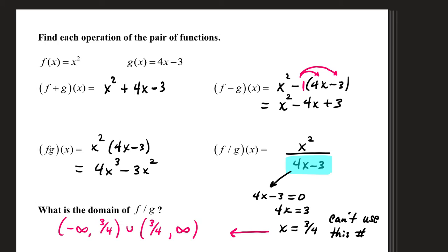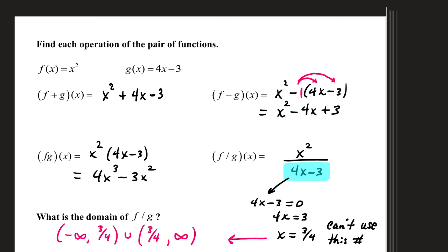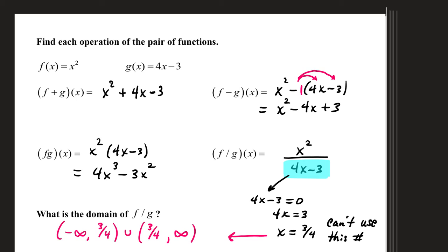In this example, find the operation of the pair of functions. We switch it up a little bit and we have a function defined as x squared, another function defined as 4x minus 3. Now there are no like terms among these functions. So when we add, it's x squared plus 4x minus 3, and there's nothing to combine, so that's actually where we stop.